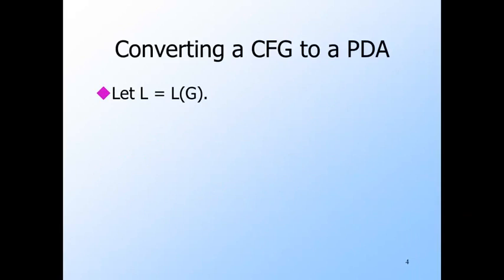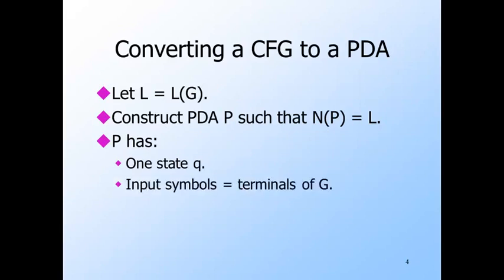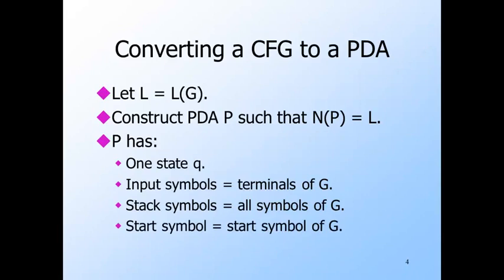Let's start with a language L that has a context-free grammar G. We'll convert grammar G to a PDA P that accepts L by empty stack. And if you want a PDA that accepts L by final state, we know how to convert to one of those. P will have only one state Q. That's all we need. Naturally, Q is the start state. There are no final states because we are accepting by empty stack. The input symbols of P are the terminals of G. The stack symbols of P are all the terminals and variables of G. And the start symbol of P is the start symbol of G.